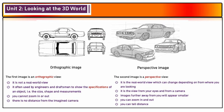There are two images on screen: an orthographic image on the left and a perspective image on the right. The orthographic image is not real and is used by engineers and draftsmen to show the specification, size, shape, and measurements of an object. You cannot zoom in or out, and you cannot tell the distance from the imagined camera. The perspective image on the right is real — the way you look at it from the camera's point of view is the same as looking with your actual eyes. The further away you are, the smaller the object becomes, and you can zoom in and out and tell the distance.